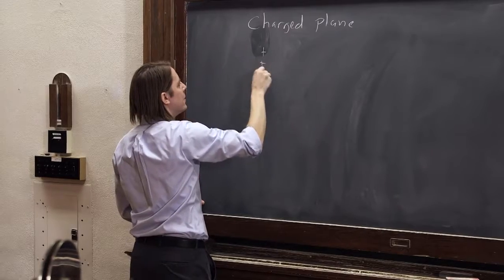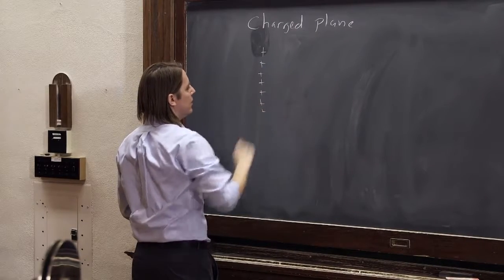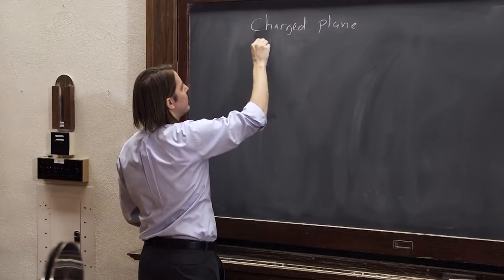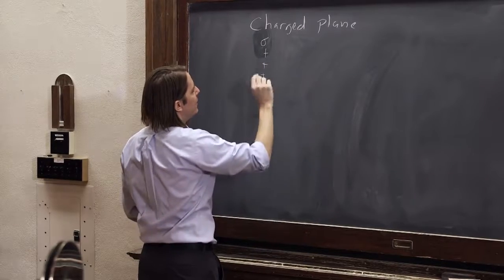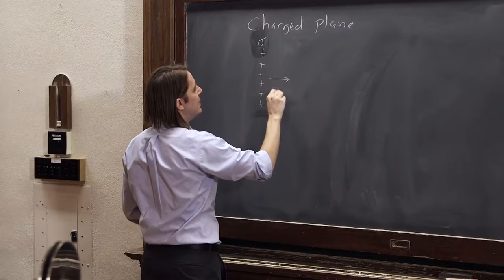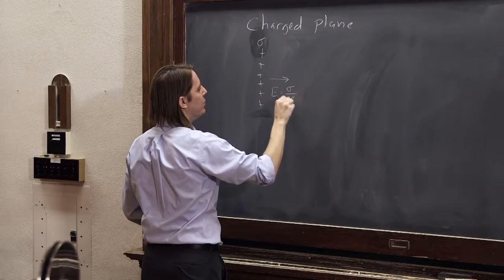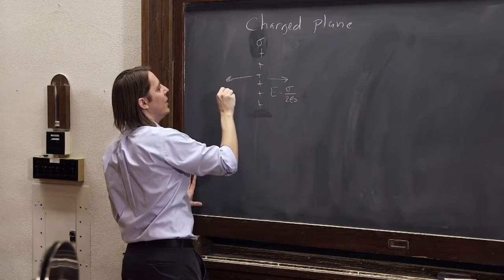So if I have a little charge plane here, it looks something like that, and it has some charge density sigma, then we know that the field just outside of it, E equals sigma over two epsilon naught, and on this side it points that way.